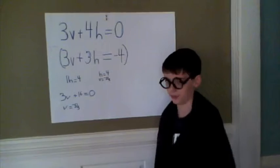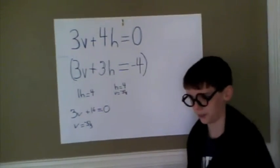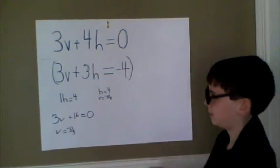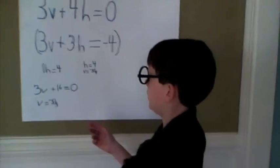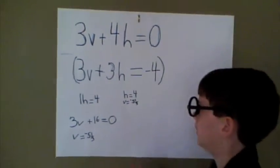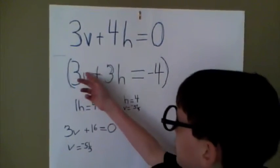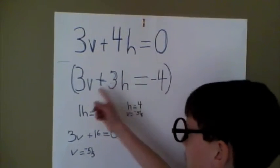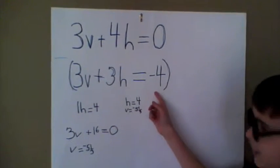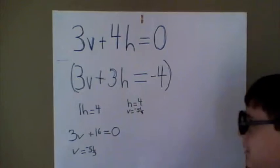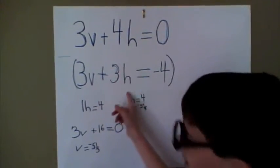This is a math video teaching you how to do linear combinations for Harry Potter games. On linear combinations, you have to subtract to get rid of one variable. So our two equations are 3v plus 4h equals 0, and 3v plus 3h equals negative 4. And v is Voldemort, and h is Harry Potter.